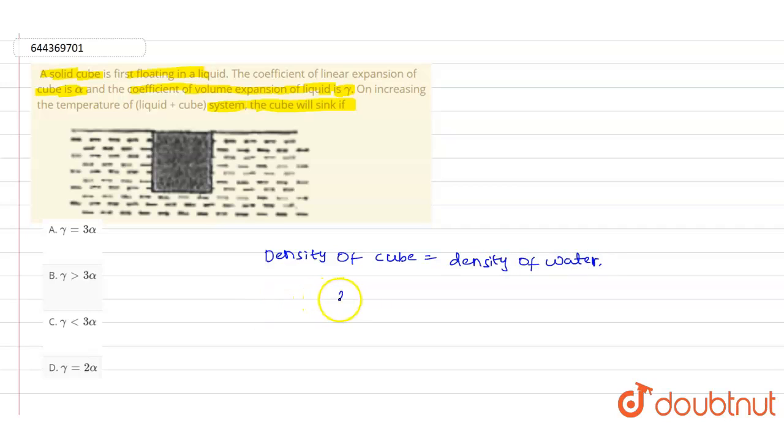According to this we can write ρ₀ will be equals to ρ'₀, where ρ is the density of the cube and ρ' is the density of the water.